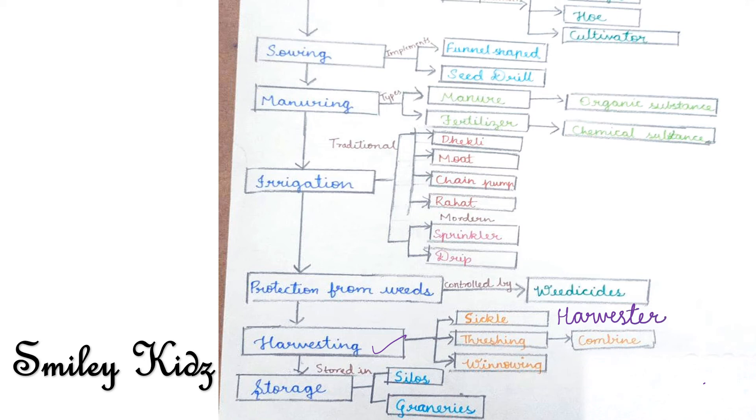There are two methods of separating grains from the chaff: threshing and winnowing. For threshing, we use a machine called combine. Combine is both a harvester as well as a thresher. The process of separating grains from chaff is called threshing.